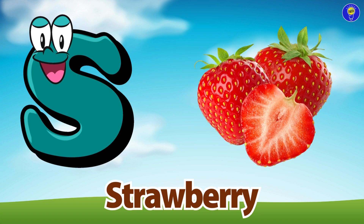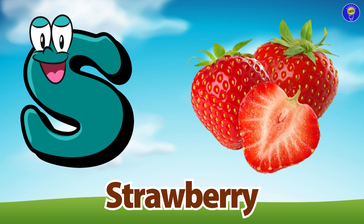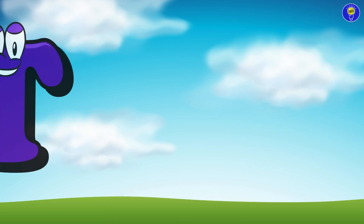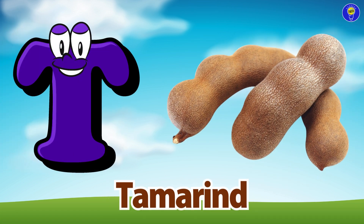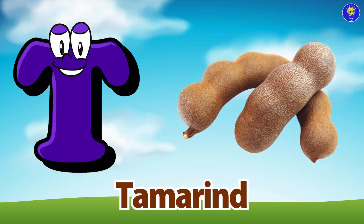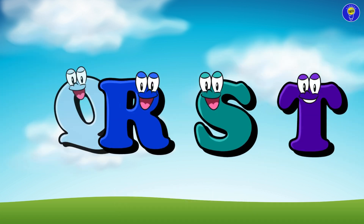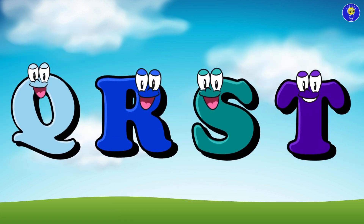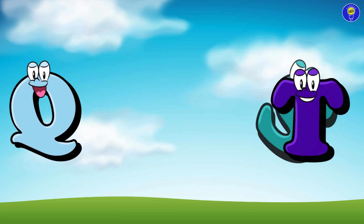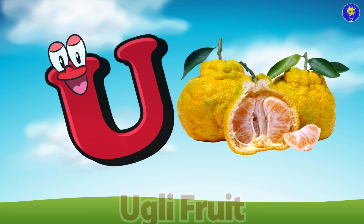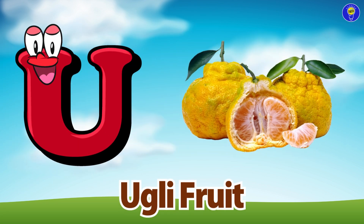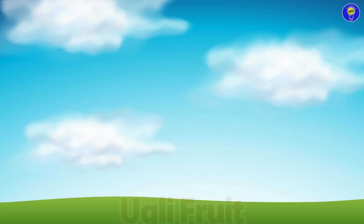S is for strawberry. Suh, strawberry. T is for tamarind. T, tamarind. U is for ugly fruit. Uh, ugly fruit.